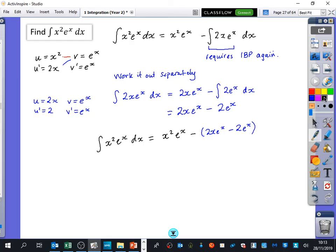So let's just finish this last part off that we've got. We can now say that it is equal to x squared e to the x minus 2x e to the x plus 2 e to the x plus c. And that is the integral of x squared e to the x.